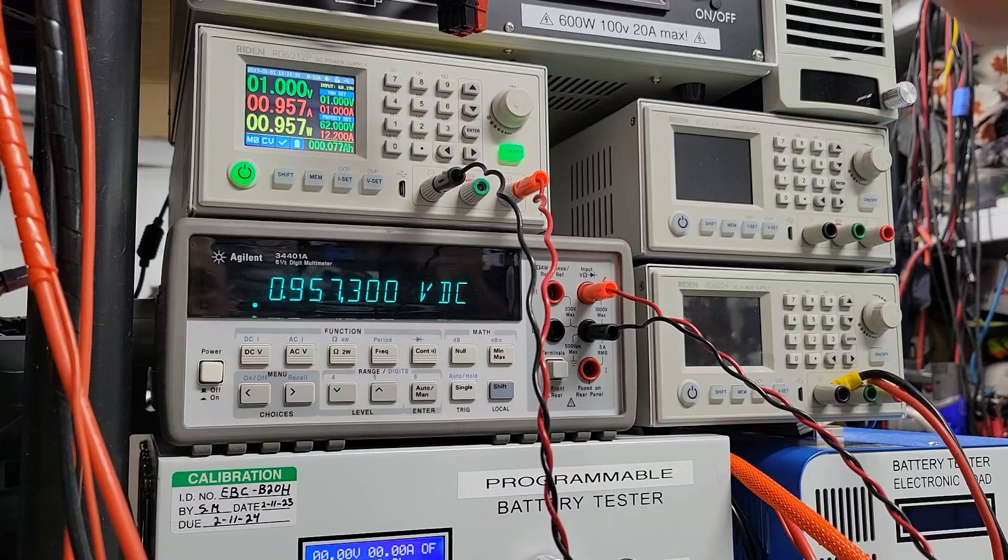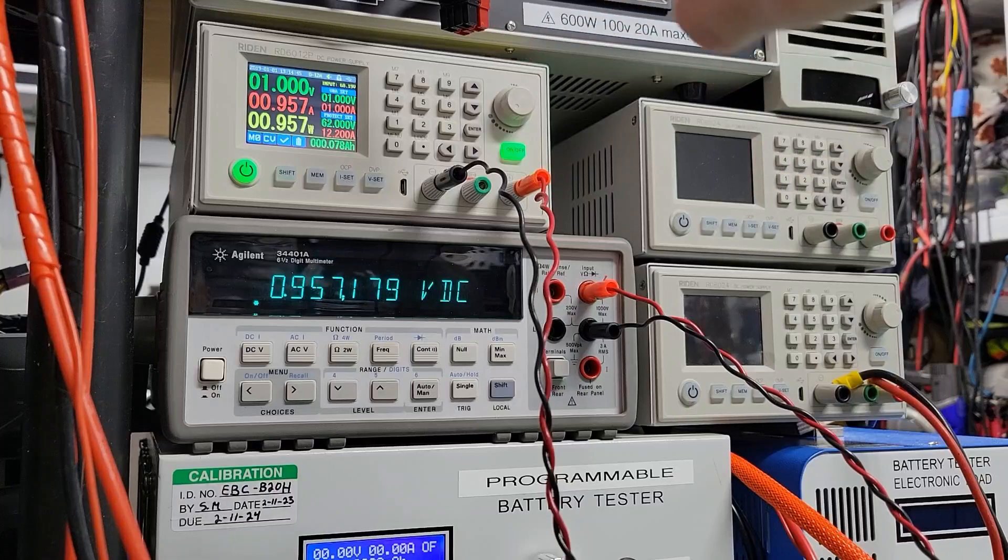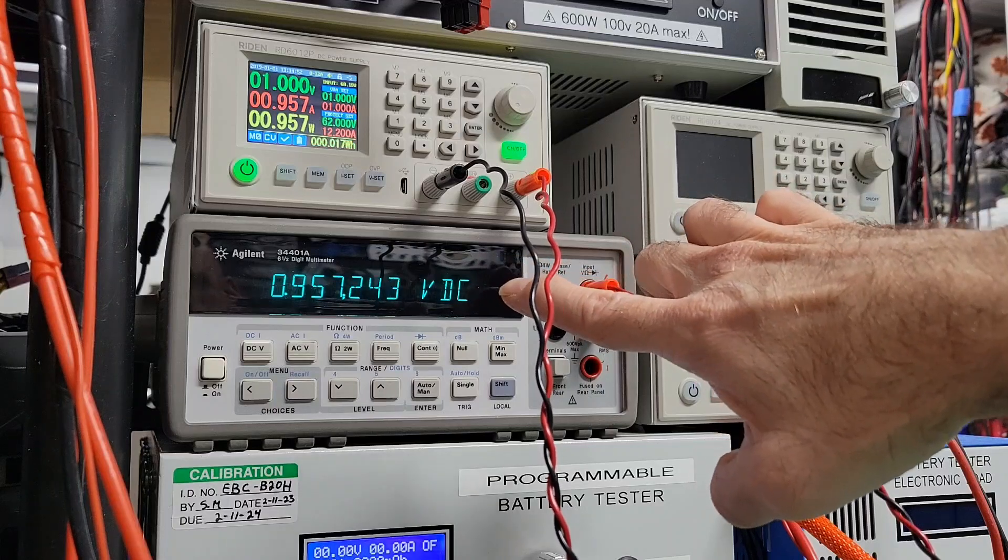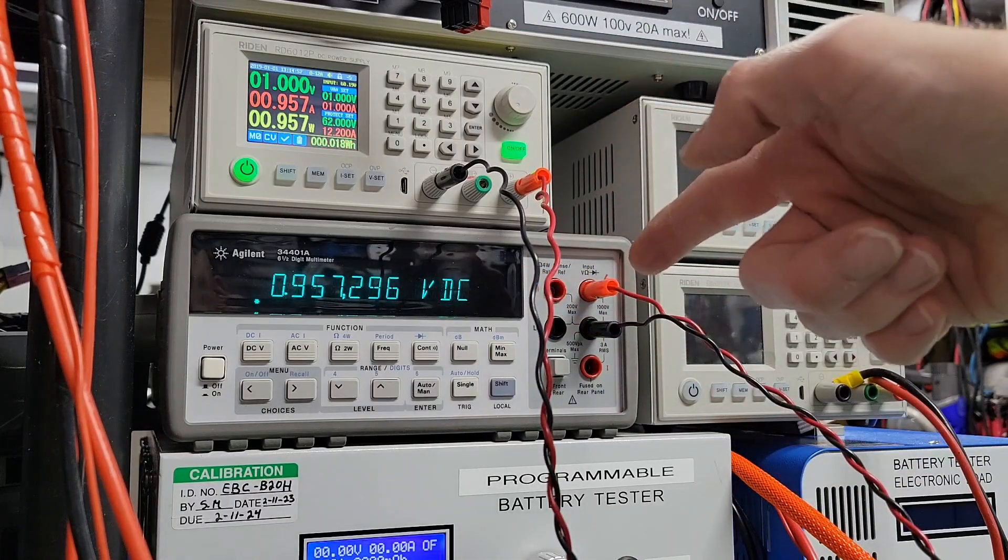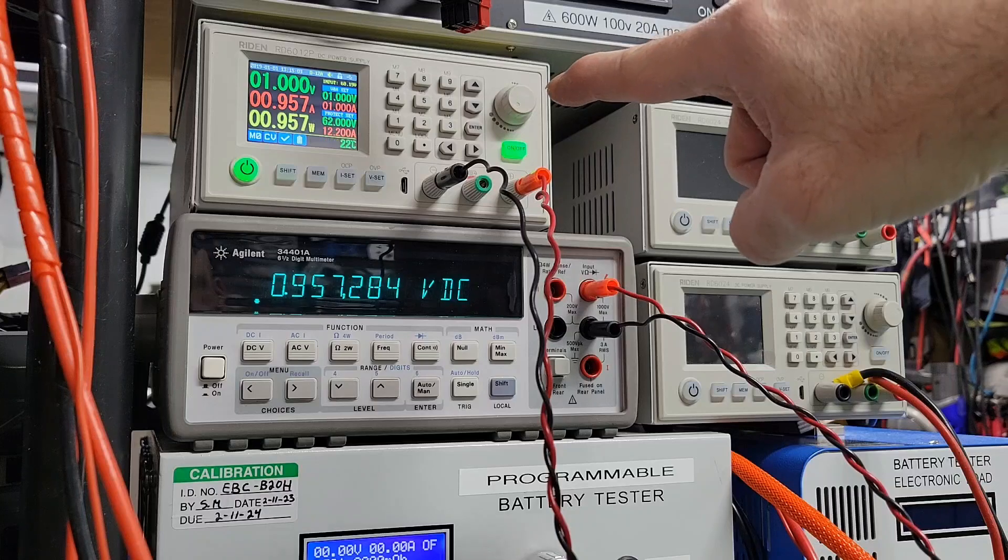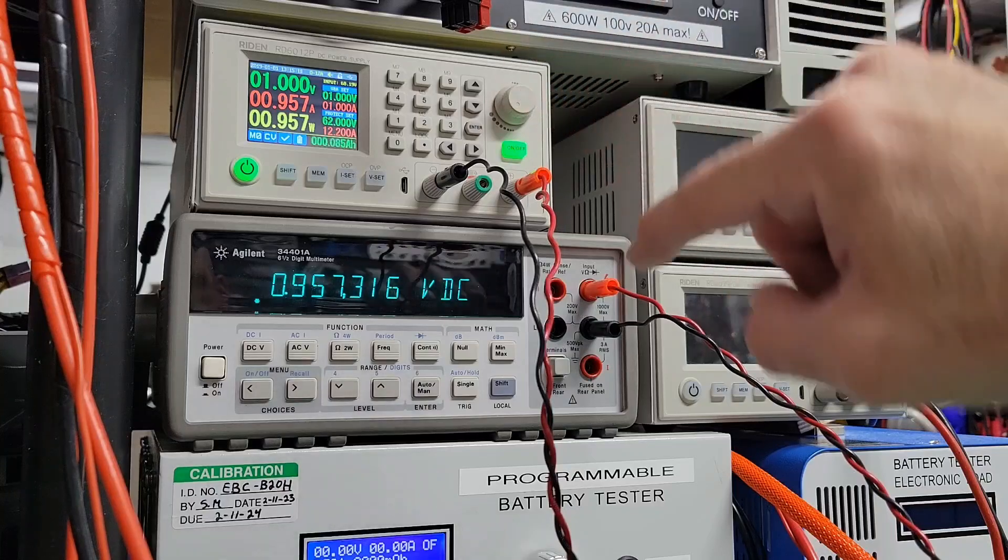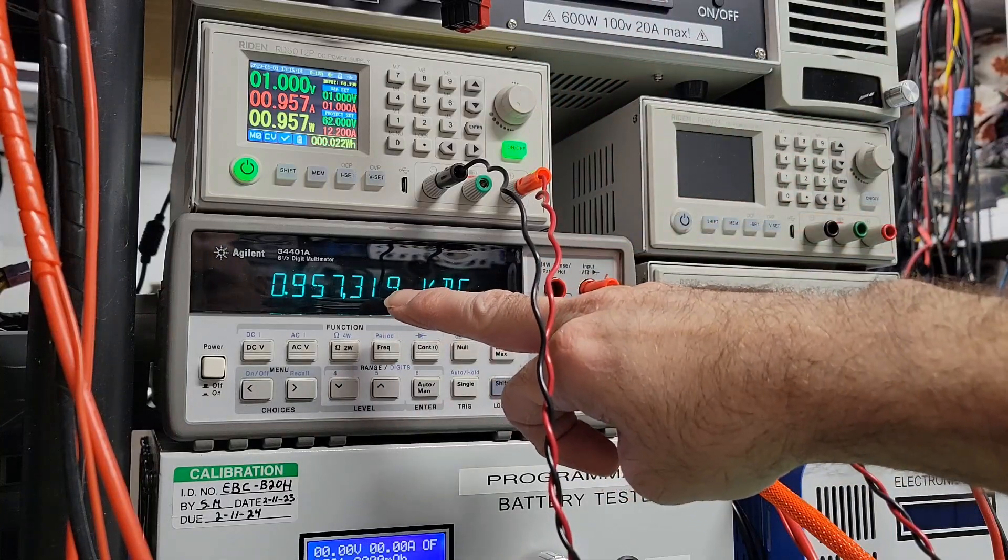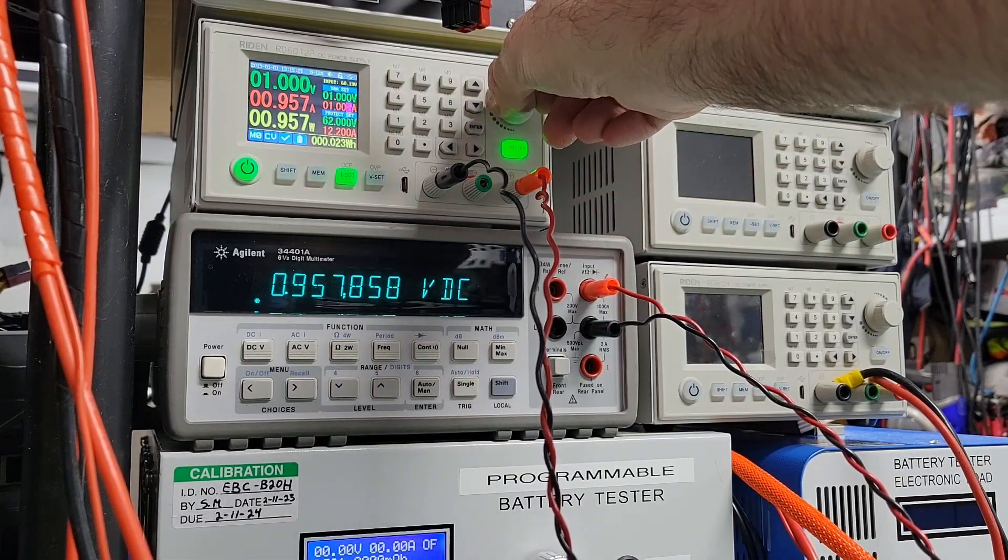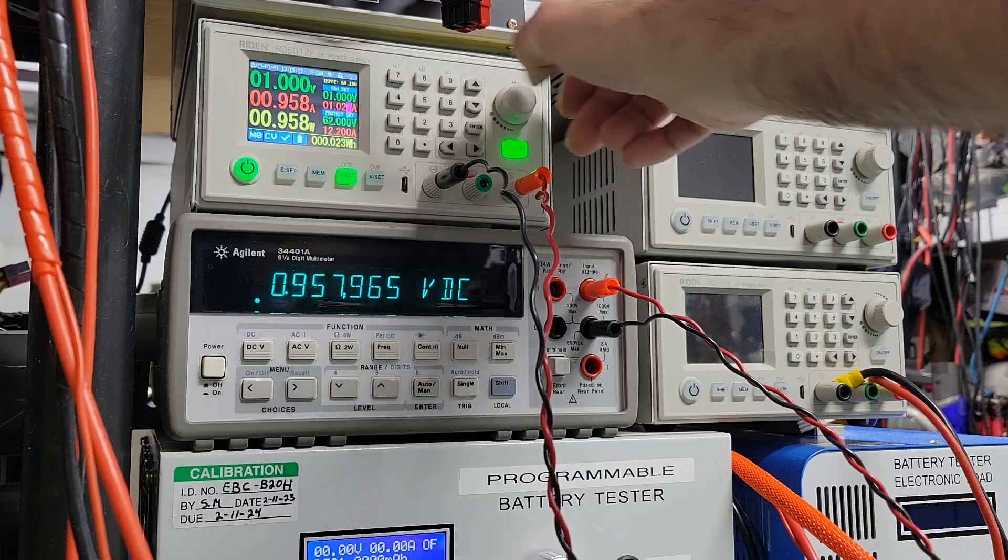So what is interesting here is that I have set the current source to 1 amp. And the output is 957 milliamp, which you can see exactly here, because this is a 1 ohm resistor. So I will have close to 1 volt voltage drop per amp. So if I want to make sure that this current source is outputting 1 amp exactly, I will have to compensate for the value that it is outputting. So I will make sure that I have 1 volt indication here.